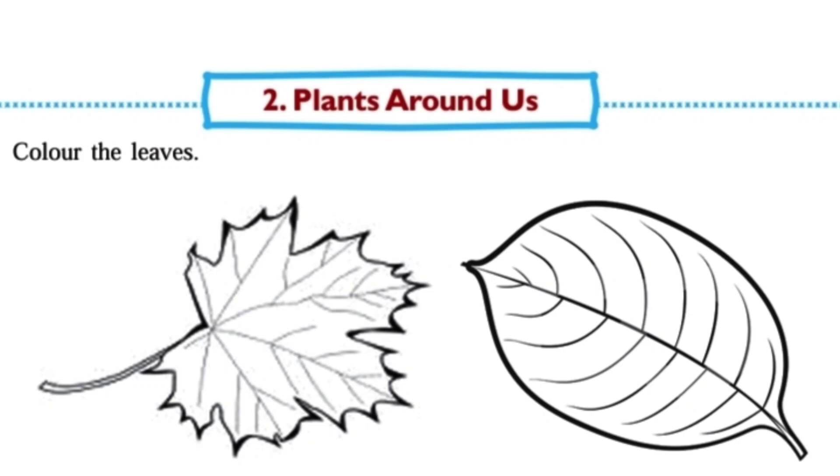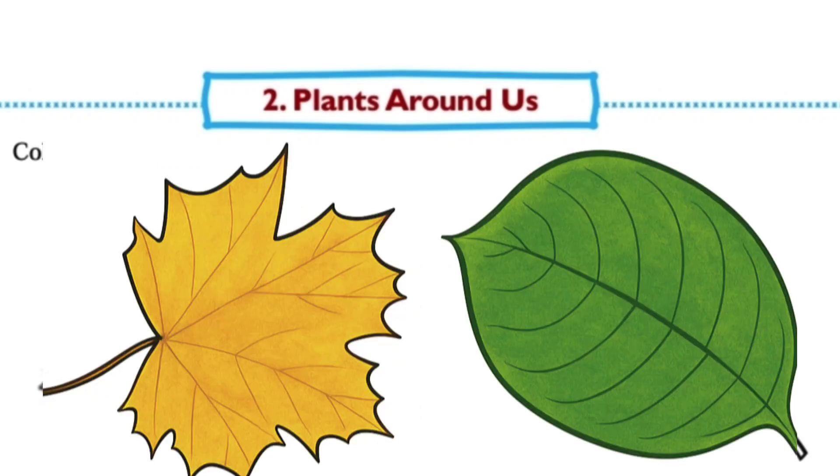Next one: Color the leaves. Here two leaves are given. Students have to color the leaves. I have colored like this. You can do. You can color as it is.